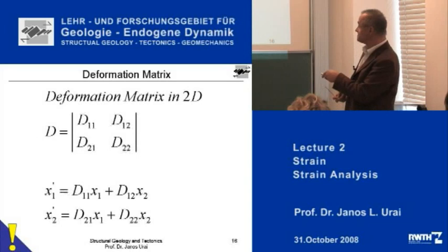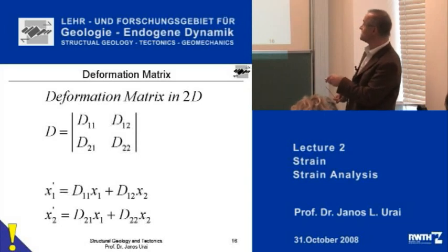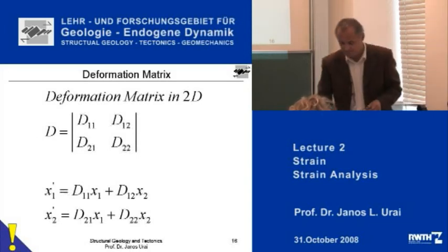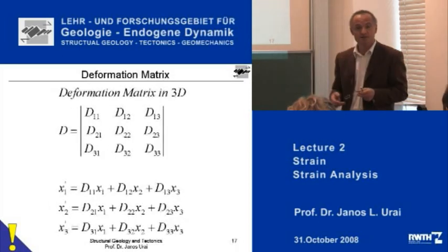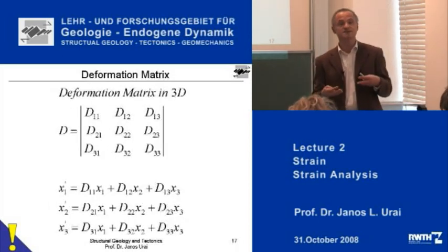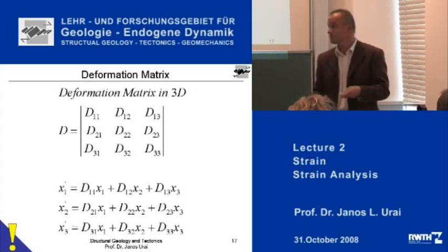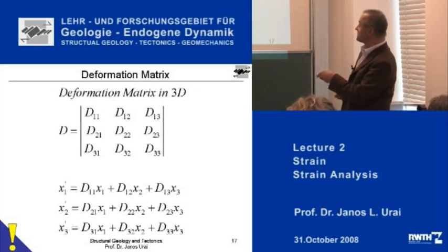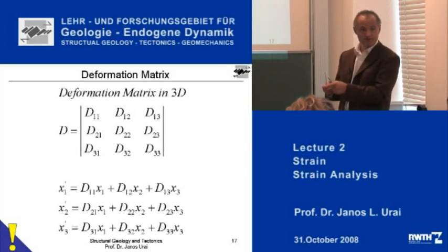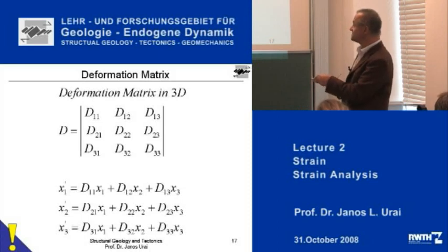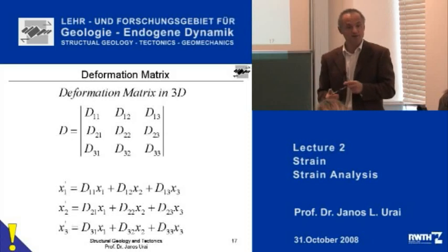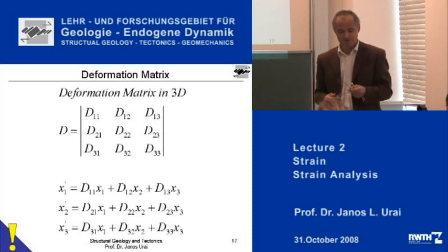In 2D this is just a repetition — it looks like this. The reason why we write it like this is because it can be very easily extended to three dimensions. Now I have three coordinates of a point: X, Y, Z, or X1, X2, X3 as coordinate axes. And now I have nine numbers — nine D numbers — but all the mathematics goes exactly the same.